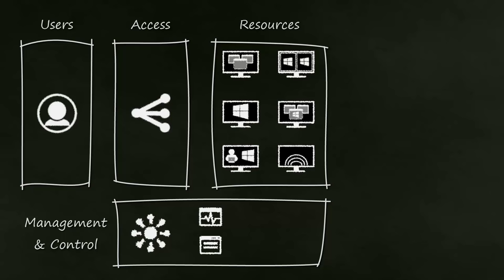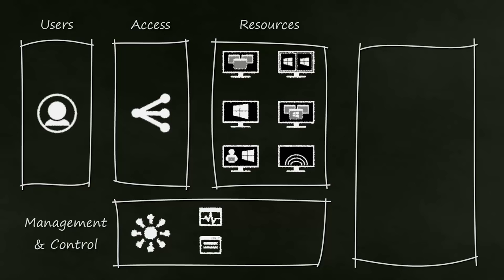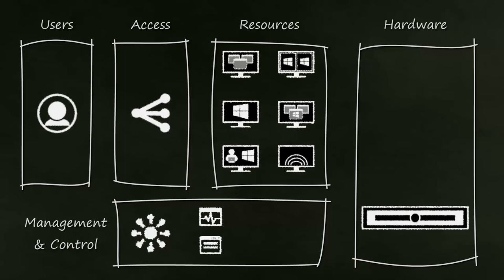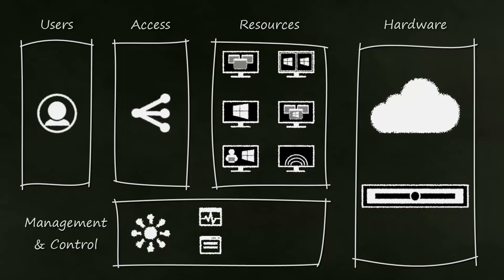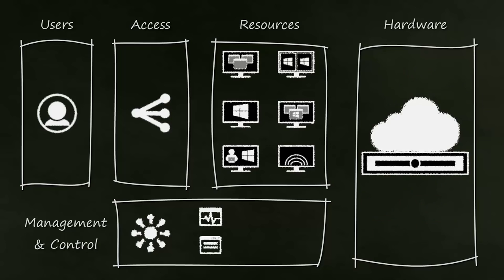Studio is used to set up and deploy the environment, while Director is used to support the users. The hardware layer is the physical representation of the overall solution, including the physical and virtual hosts to deploy the solution. As an organization, you can decide if you want to virtualize on-premise with Citrix Zen Server, Microsoft Hyper-V, or VMware vSphere. For cloud-based deployment, Zen Desktop allows you to deliver resources from Citrix Cloud Platform, Amazon AWS, and Microsoft Azure. Zen Desktop also lets you have a hybrid deployment where some resources are located on-prem while others are in the cloud.